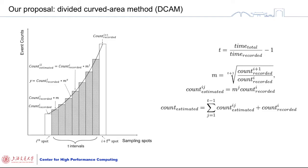Here we provide an example of our divided curve area method (DCAM). We assume that unrecorded counts grow non-linearly between two recorded counts, and that the time intervals between two recorded counts are discrete. We employ a non-linear interpolation method in exponential form. The gradient m and each estimated count are calculated by the equations listed here.